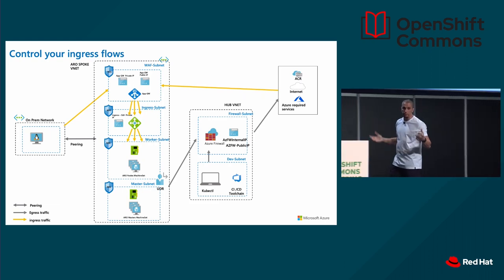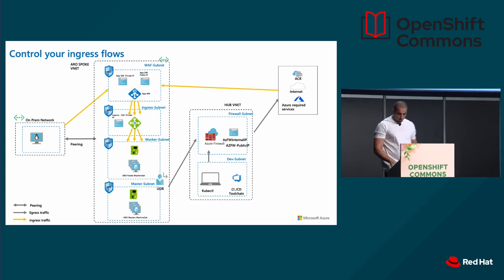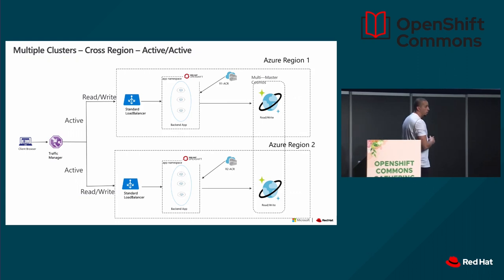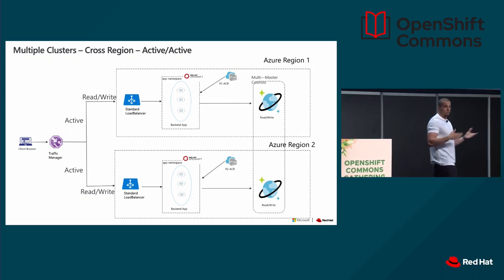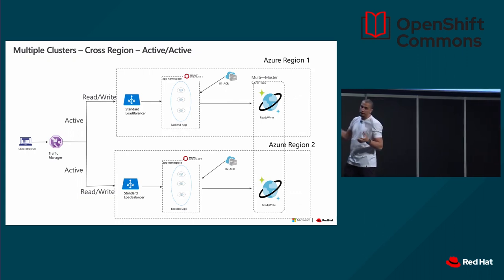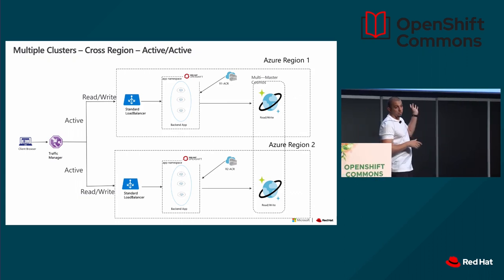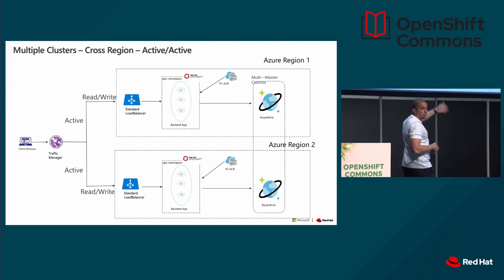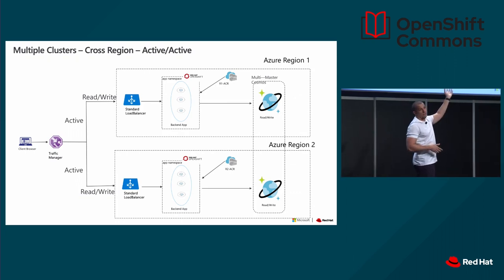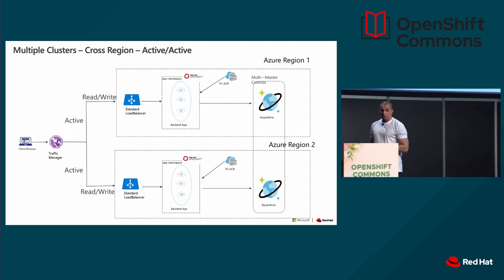On regional availability, you can deploy clusters across multiple regions. If you want an active-active scenario, you can't do this with relational databases, so you need something like NoSQL — that's Cosmos DB, our NoSQL offering. If your state can be stored there, you can have an active-active cross-region setup for Azure Red Hat OpenShift.